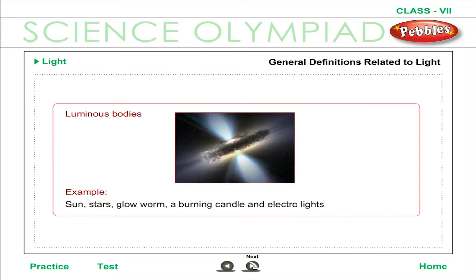General definitions related to light. Luminous bodies: an object that emits its own light is called a luminous body. Examples include the sun, stars, glow worm, a burning candle, and electrolytes.